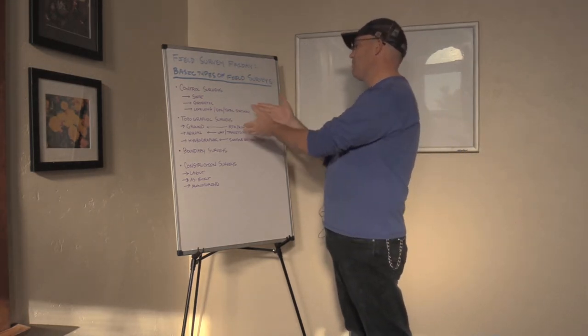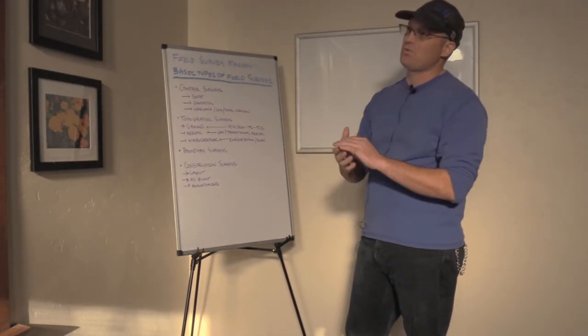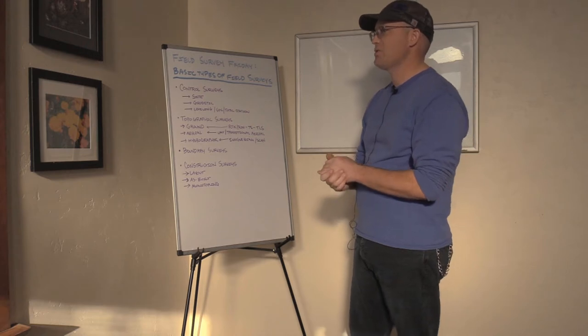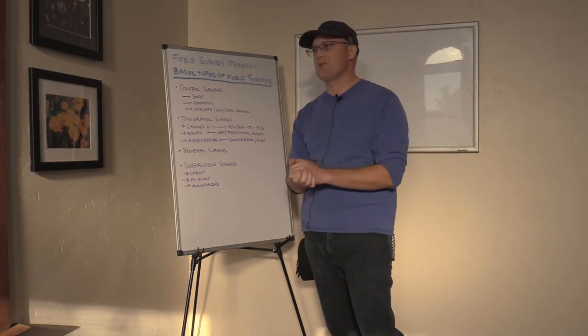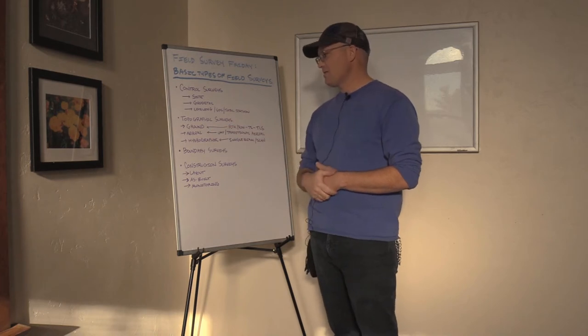And the second type of survey we have is what we call topographic surveys. That's where we're going out to make measurements that can be used to draw a topographic map of some kind. So we want to know what's on the surface of the earth. What does it look like?